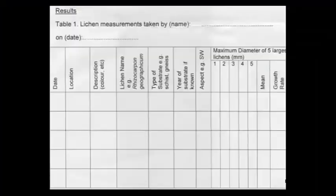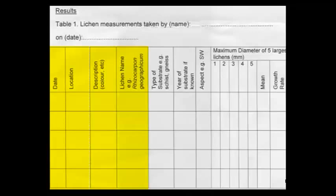You should record your data in a table like this one. You should first note down the date, location, and a brief description of the lichen. You should be able to identify the lichen name — in this instance, it's Rhizocarpon geographicum. You should also note down the type of substrate. It is also important to take down the aspect using a compass.